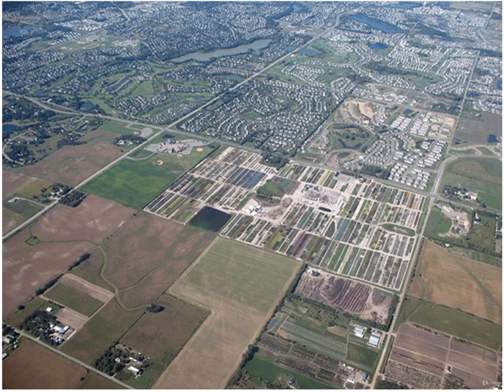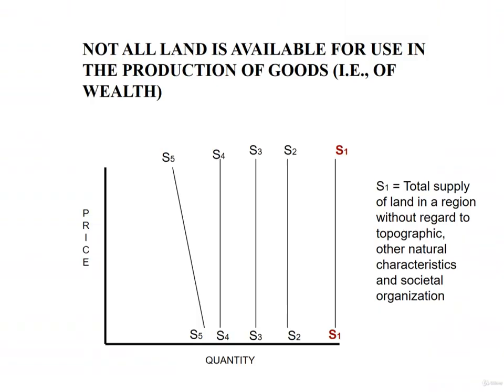Getting back to the economics of land markets and the problem with the neoclassical assertion that price clears land markets in the same way price clears markets for labor, capital goods, and credit — what follows is a graphical look at what makes land markets so different. Now let's take a look at the supply of land that is actually available to be brought into production. In this graph, the total supply of land in a region, without regard to topographical or other natural characteristics or to the degree of societal organization, is indicated by the curve labeled S1.